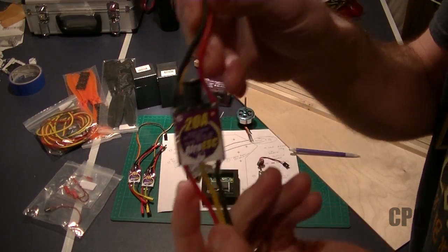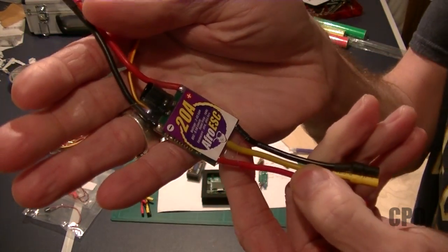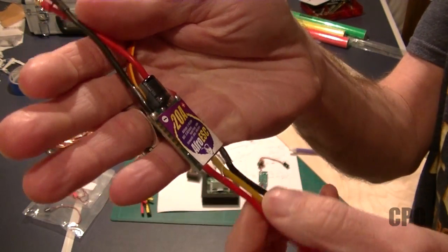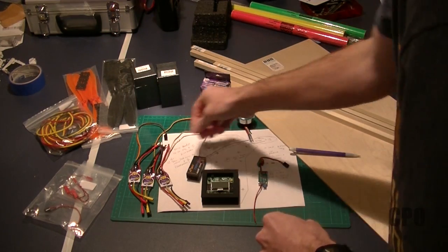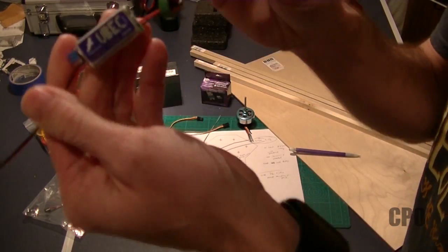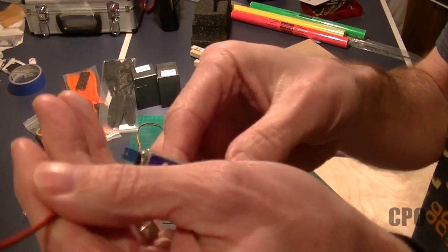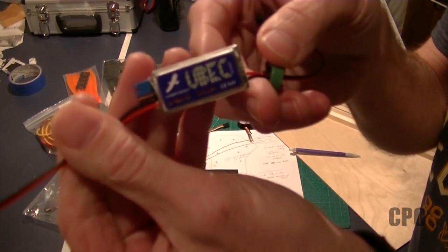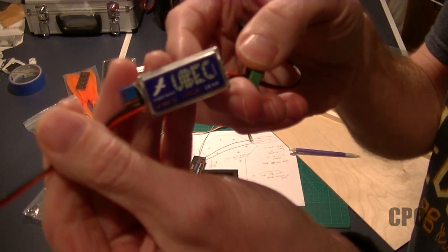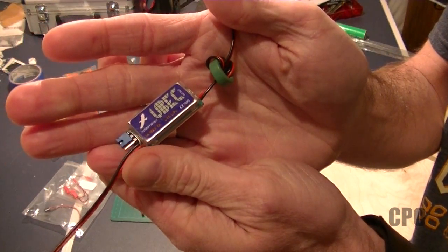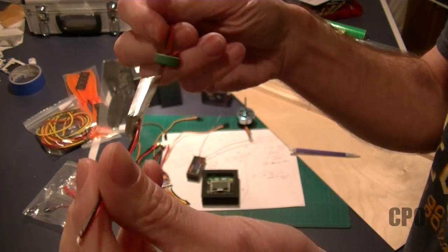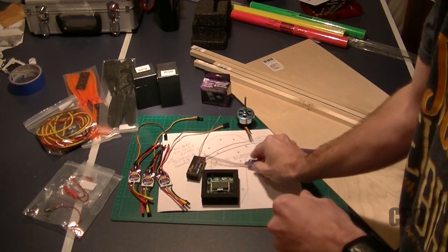Here are my Afro 20-amp ESCs. I like that these have the Simon K firmware built in. They don't have a significant BEC, so I have an external BEC here that I'll use to power that tail servo because I think it's going to need more guts than what those Afros can provide. I'll use the Afro to supply power to the board and the receiver though.